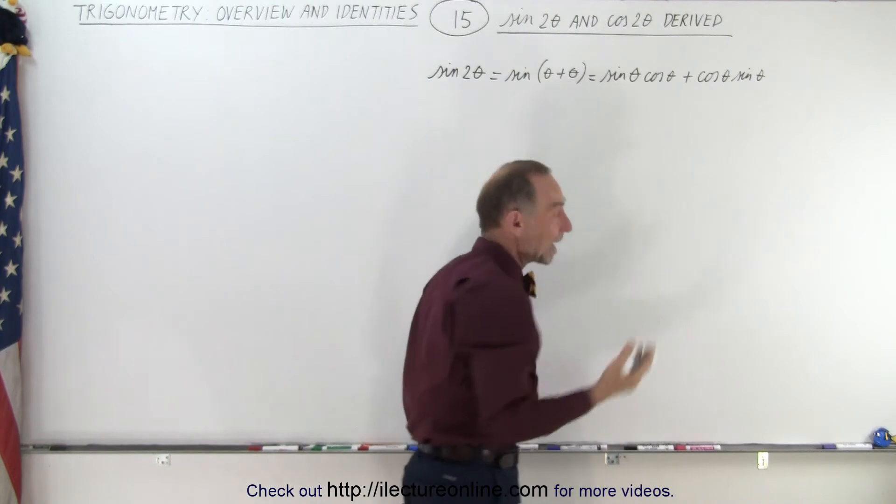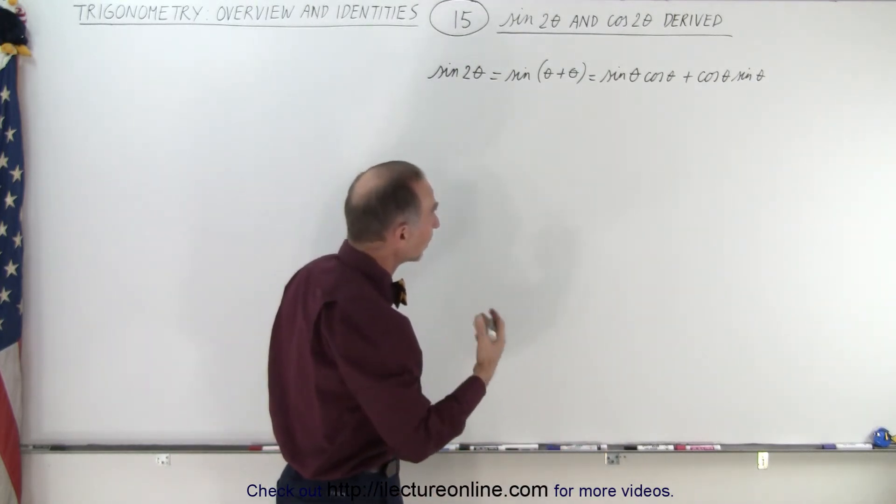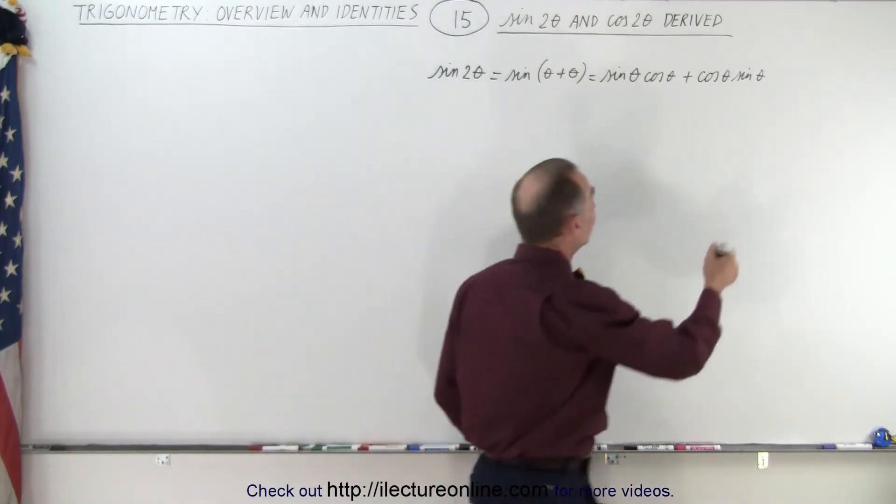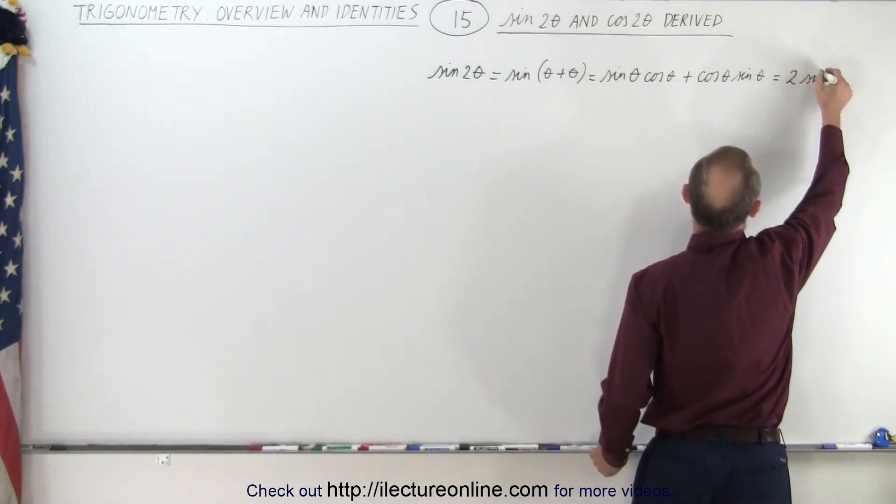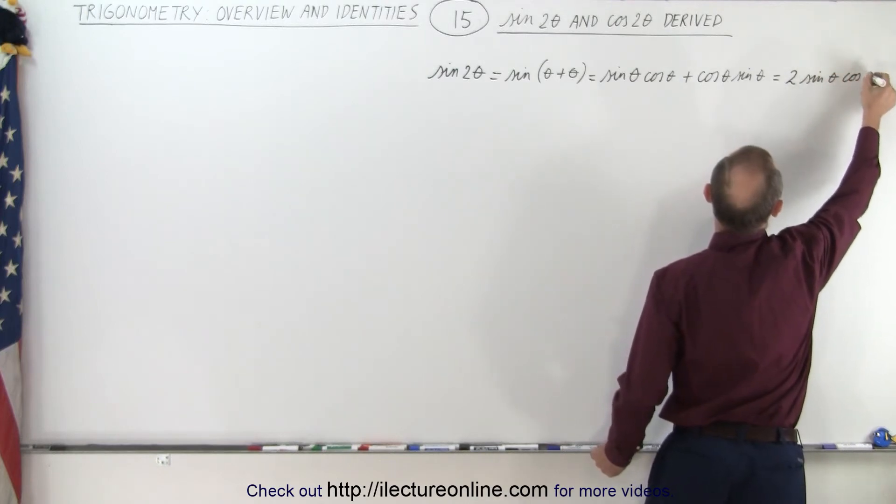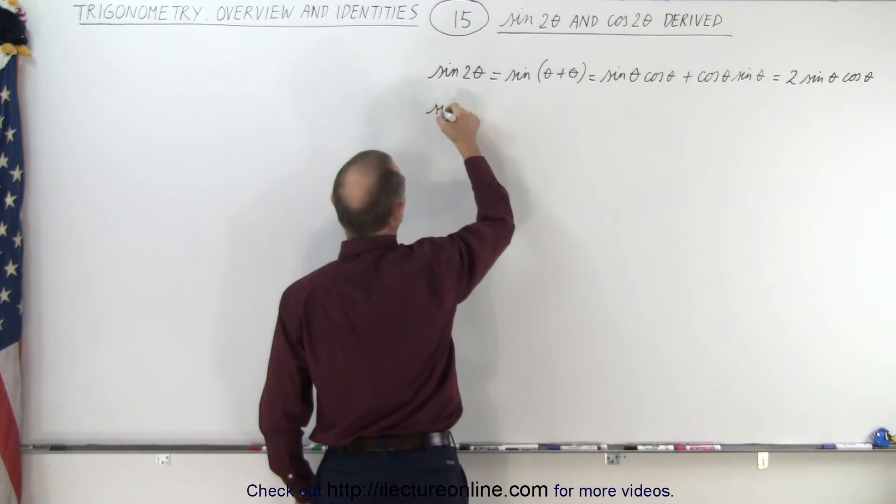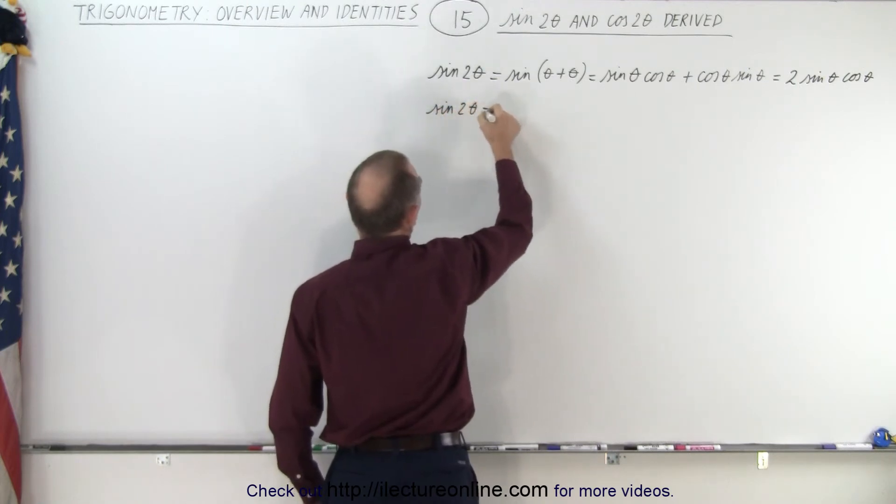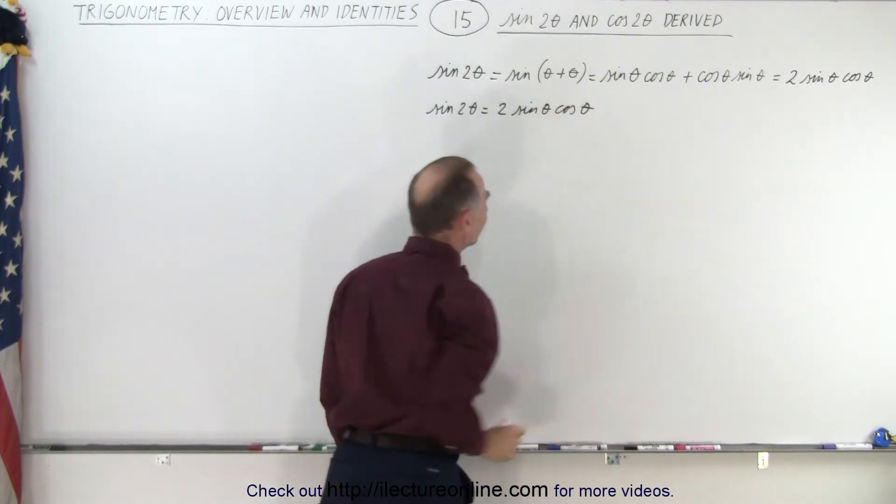In this case, the angles are the same, which means you have two identical expressions: sine of theta cosine of theta twice. This can be written as two times sine of theta times cosine of theta. So the sine of two theta can simply be written as 2 sin(θ) cos(θ). Very straightforward.